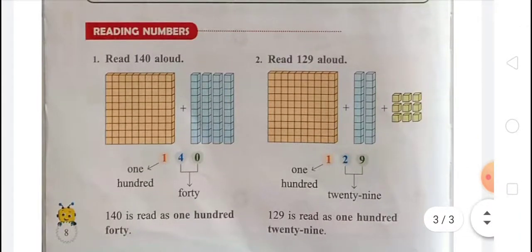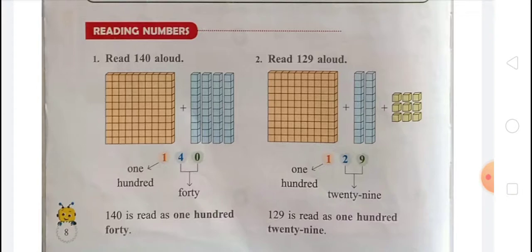Next topic: reading numbers. Read 140 aloud. For 140, there is 1 big block of 100 blocks, and 4 blocks of tens making 40. So 100 plus 40 equals 140. On the ones place there is 0, on the tens place there is 4, and on the hundreds place there is 1. 140 is read as one hundred forty — O-N-E, H-U-N-D-R-E-D, F-O-R-T-Y — 140.